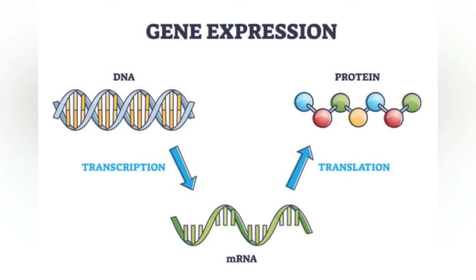Another modification is 3' cleavage and polyadenylation. They occur if a polyadenylation signal sequence is present in pre-mRNA, which is usually between the protein-coding sequence and the terminator. The pre-mRNA is first cleaved and then a series of approximately 200 adenines are added to form a poly-A tail, which protects the RNA from degradation. The poly-A tail is bound by multiple poly-A binding proteins necessary for mRNA export and translation reinitiation.